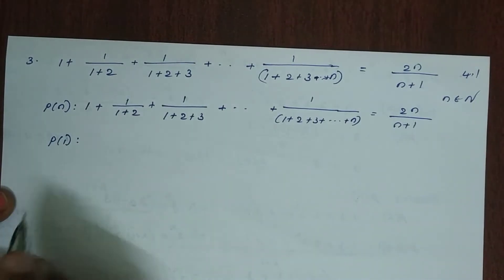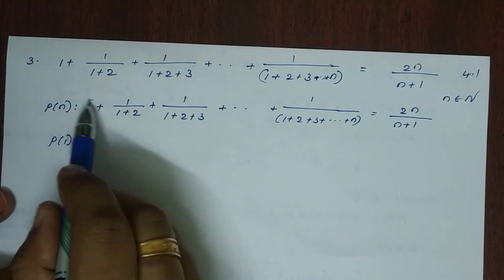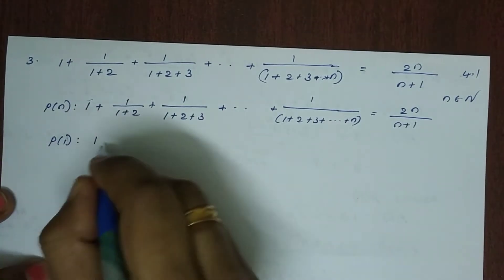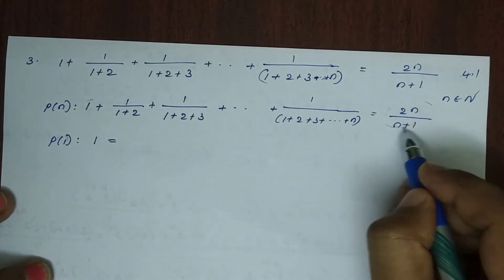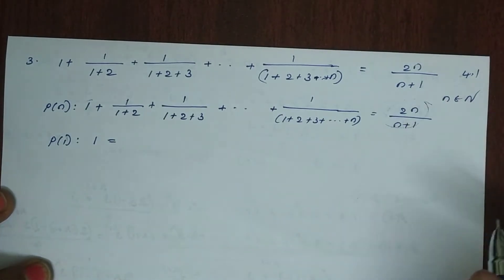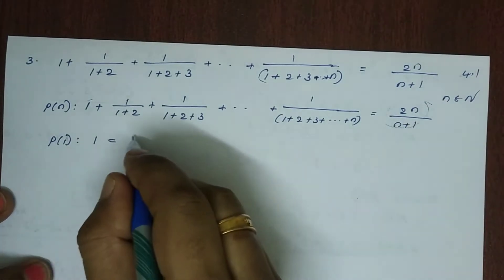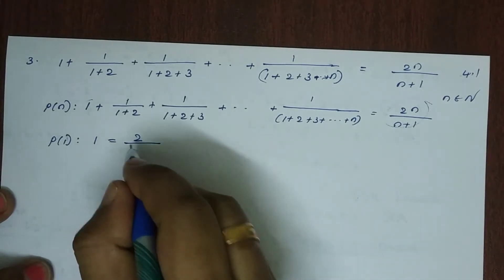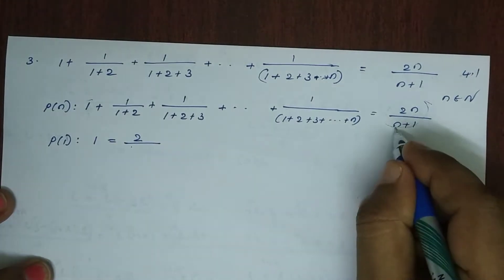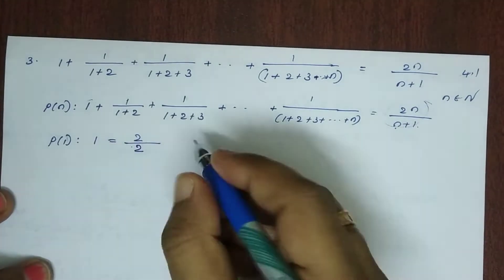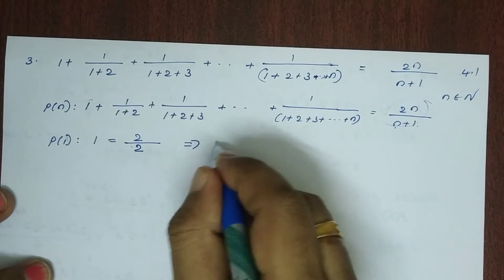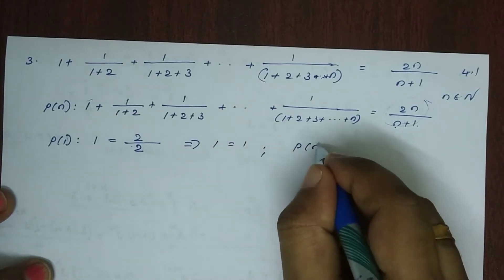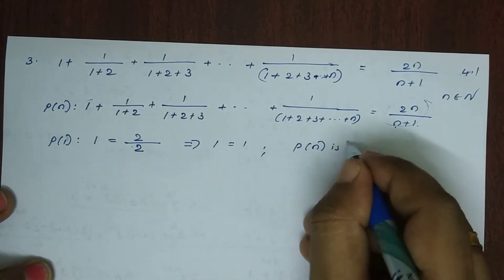For the base case, we check that P(1) is true. Substituting n=1, the left-hand side gives 1, and the right-hand side gives 2(1)/(1+1) = 1. This implies 1 is equal to 1, so P(1) is true.